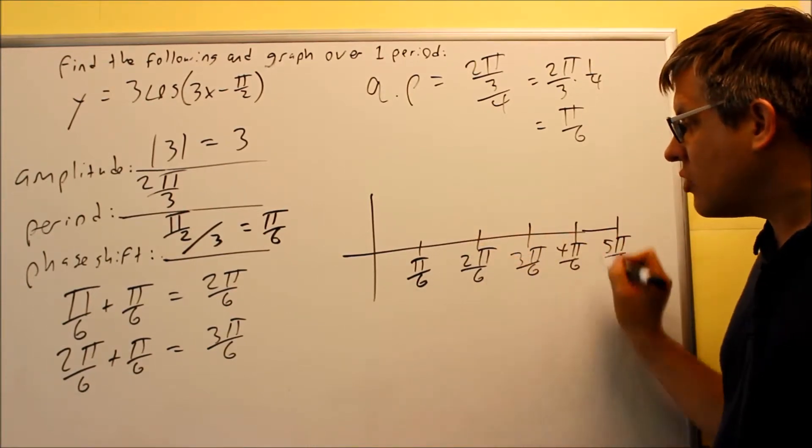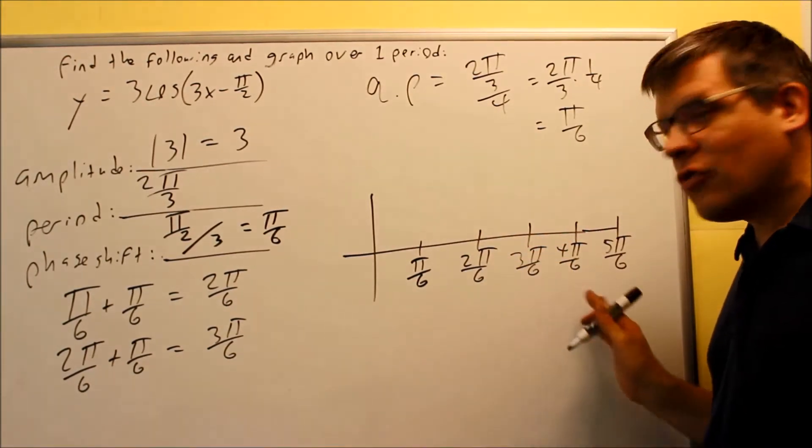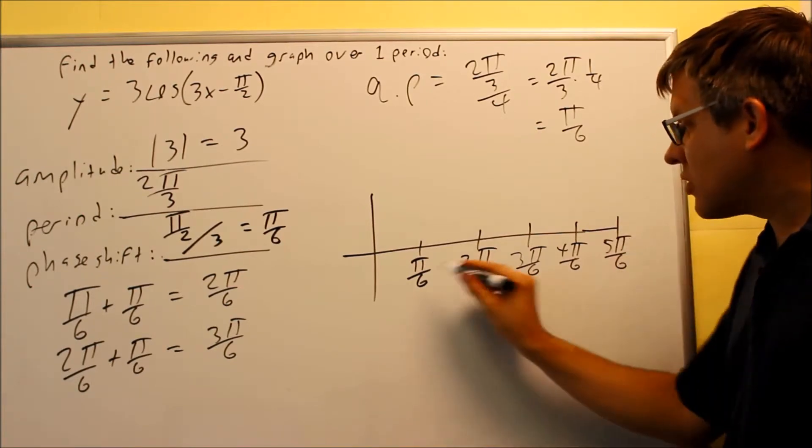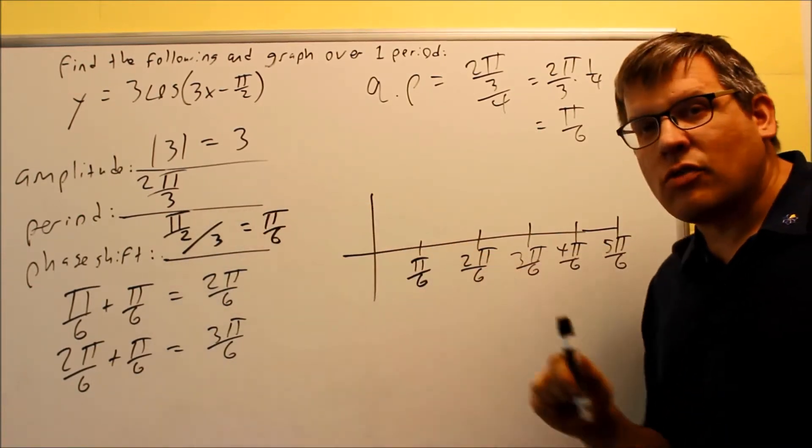So that does work out. You should always do that check. That will tell you if you did these key points correctly. If you take the last one minus the first one, that should always give you your period.